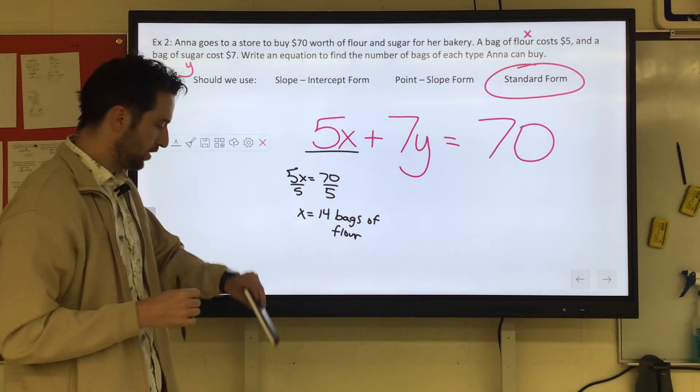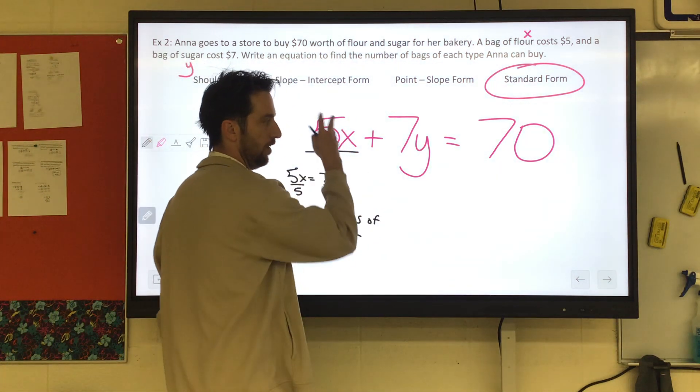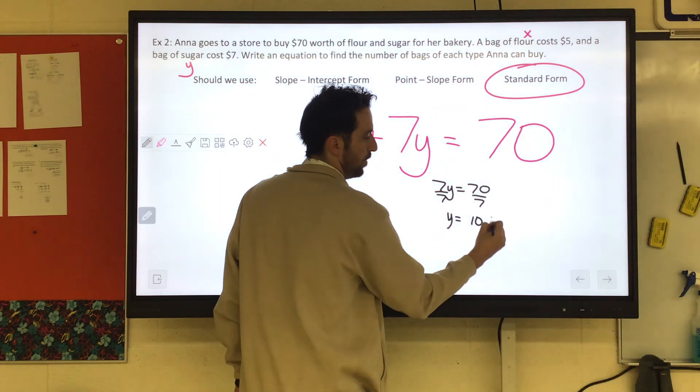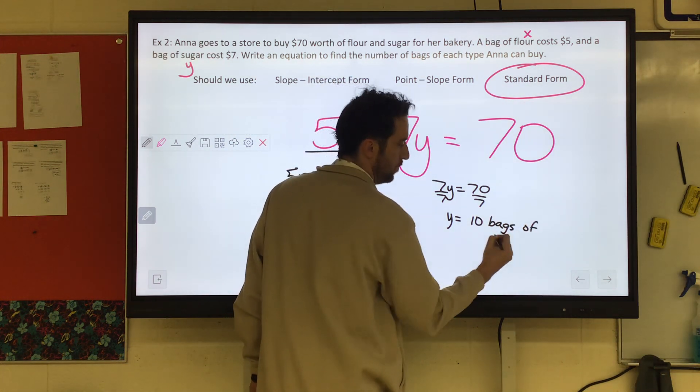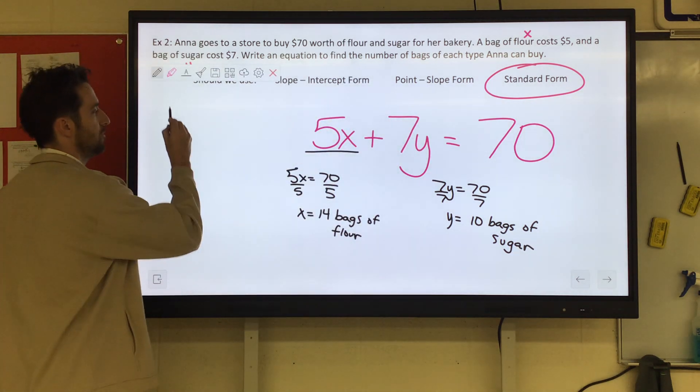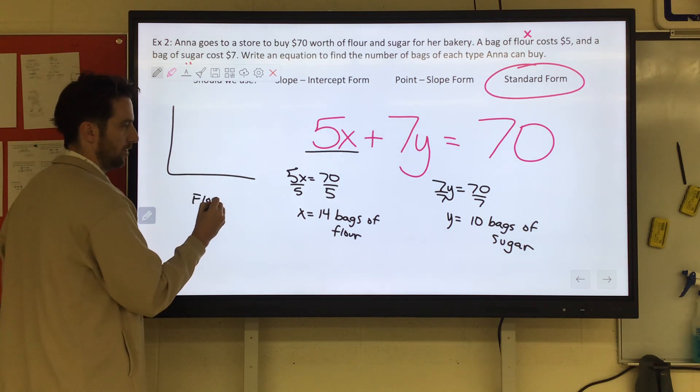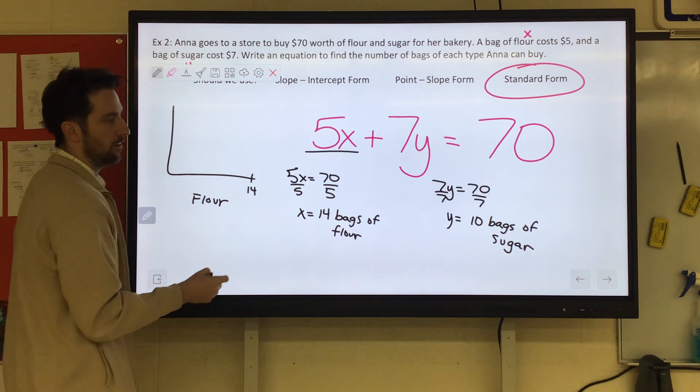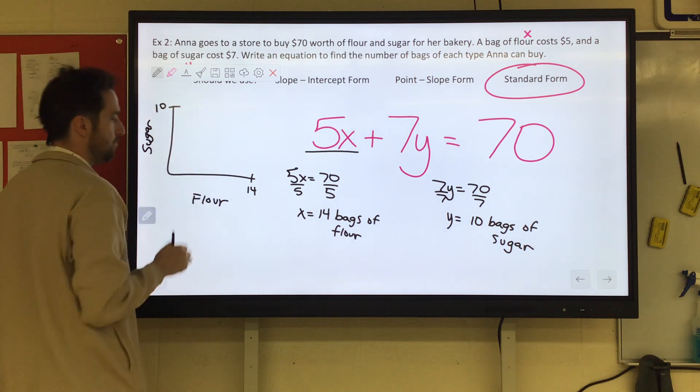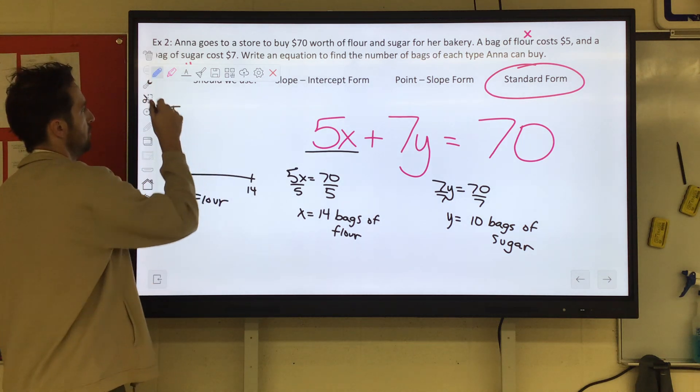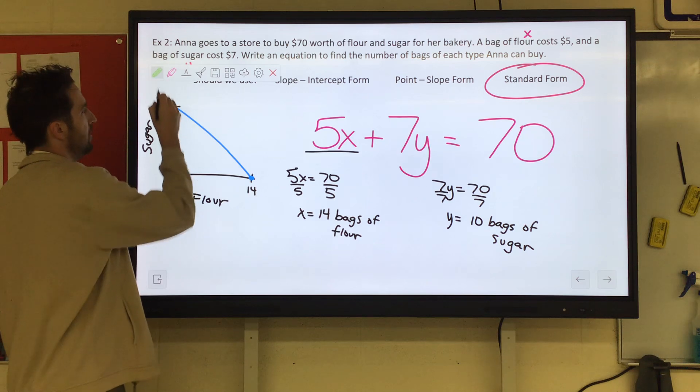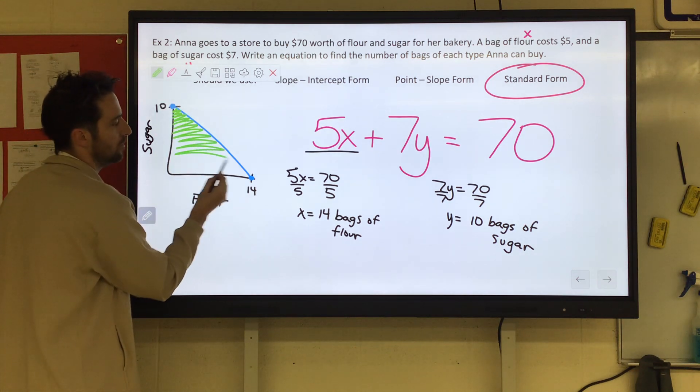And if you're like, well, how about if you only bought sugar? Well, that would be zero bags of flour. So then we would just have 7y equals 70, divide by 7. You could buy 10 bags of sugar if you only bought sugar. So again, this is cool to think about. If you thought of this like a graph, our x-axis is the flour. We can get up to 14 bags of that. Our y would be the sugar, and we can get up to 10 bags of that. So those would be like our intercepts.